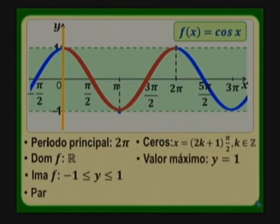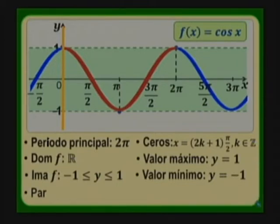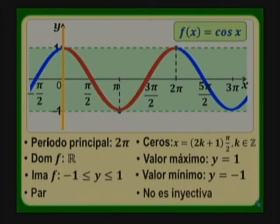El valor máximo es y igual a 1, el mayor valor que alcanza la función. El valor mínimo es y igual a menos 1, el menor valor que alcanza. La función no es inyectiva: si trazamos rectas paralelas al eje de las x y cortan en más de un punto, la función no es inyectiva y no tiene inversa. Se puede estudiar su inversa restringiendo su dominio, pero no lo veremos en esta ocasión.